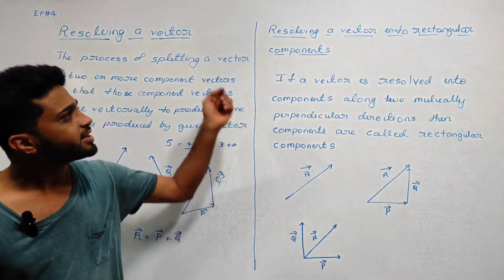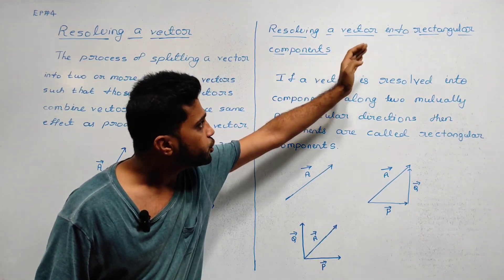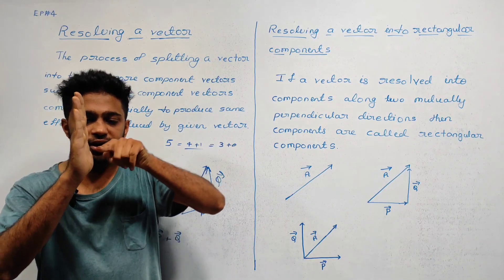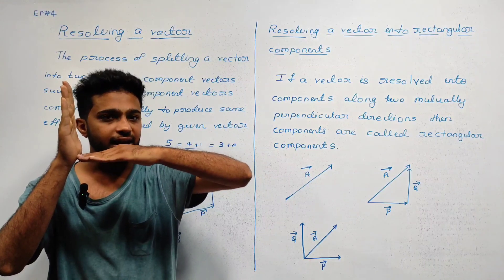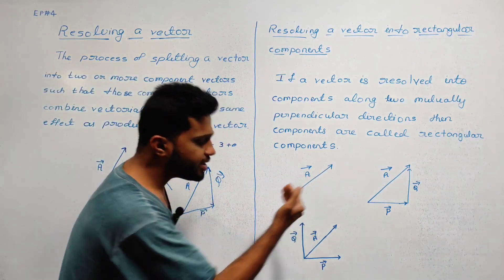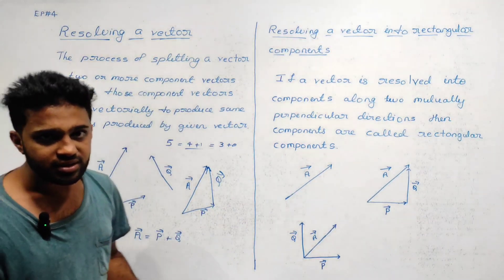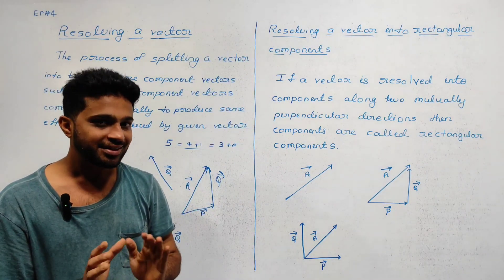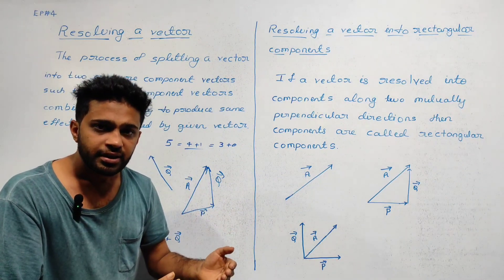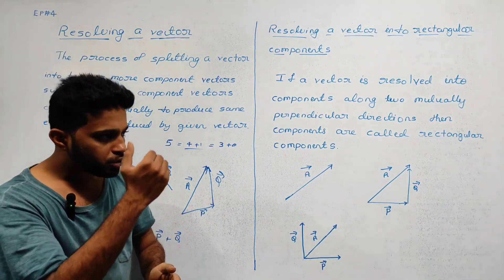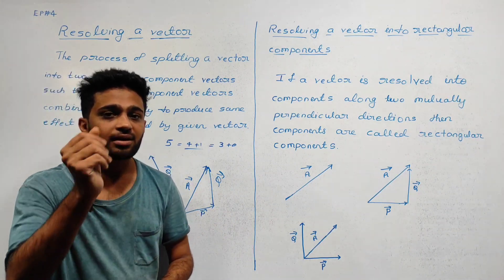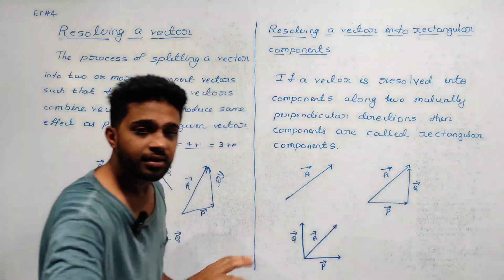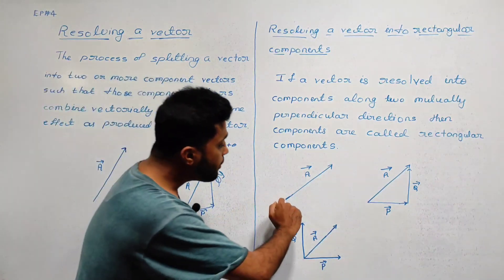Resolving vector into rectangular components. The two component lines are at 90 degrees — we get a rectangle. The components are mutually perpendicular. Vector A is resolved into vector P and vector Q as rectangular components of vector A; this angle is 90 degrees.